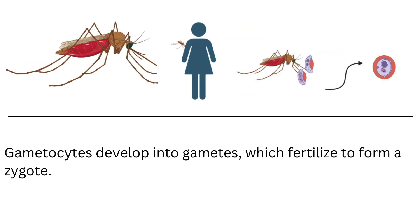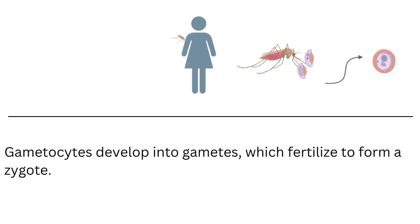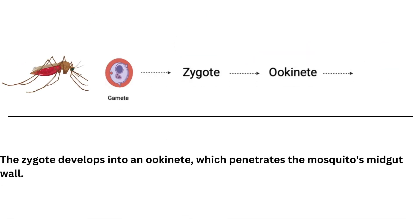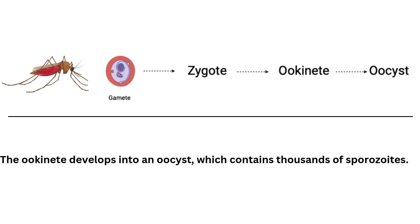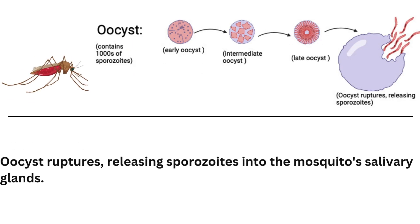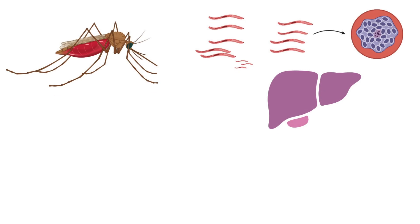The gametes fertilize to form a zygote — quite analogous to the human setting where eggs and sperm fertilize. Inside the mosquito, the zygote develops into an ookinete. The ookinete penetrates the midgut of the mosquito and develops into a form known as an oocyst. The oocyst eventually ruptures, releasing sporozoites. The sporozoites migrate to the salivary glands of the mosquito, ready to be transmitted to a human via a mosquito bite, and then the cycle continues.